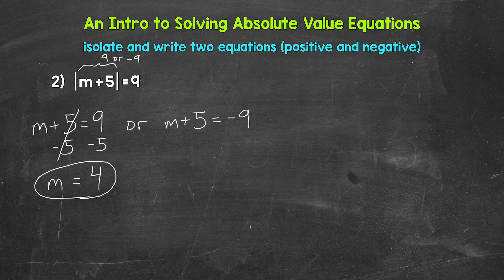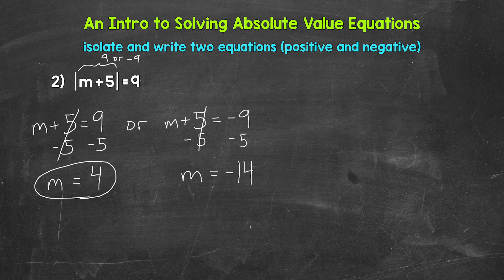Now let's solve m plus five equals negative nine. We need to isolate m, so subtract five from both sides. The fives cancel each other out. On the right side, negative nine minus five gives us negative 14. So m equals negative 14.